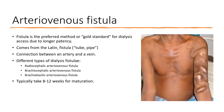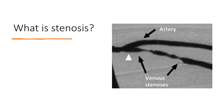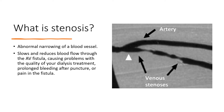A fistula typically takes at least eight to twelve weeks to get big enough — a process called maturation — before it allows for cannulation. The main complication of fistulas is stenosis, an abnormal narrowing of the blood vessel. Stenosis slows blood flow through the AV fistula, causes problems with dialysis quality, can cause prolonged bleeding after puncture, pain, and can lead to a blocked or clotted access. That is why we try to identify stenosis early through physical examination.